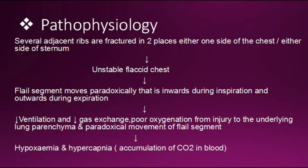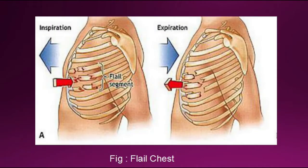Hypoxemia means lack of oxygen in the blood, and hypercapnia means accumulation of carbon dioxide in the blood. Here you can see a picture of flail chest. You can see the rib fracture, and during inspiration the red line goes inward, while during expiration it goes outward.